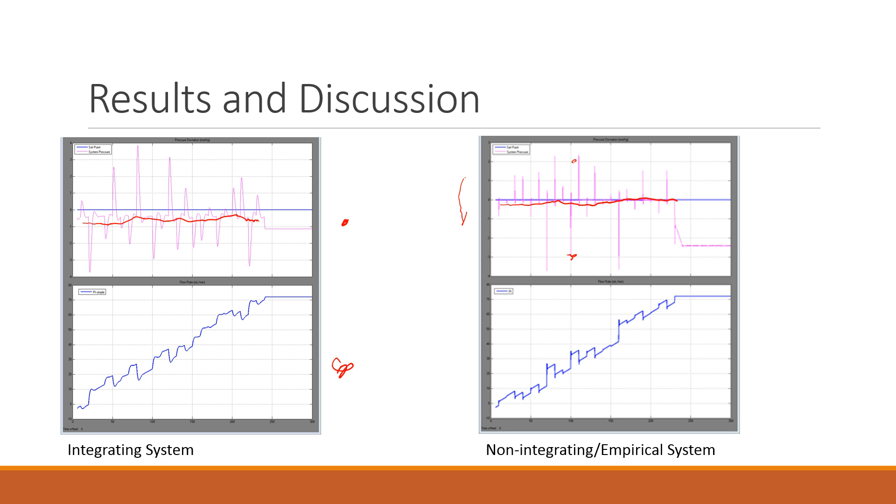The other thing we see is this upward trend in the flow on both. That physically represents the cells in the kidney being stripped away, and we're able to reach the maximum flow rate that the pump can put out. We also see that the more complex model is able to reach that maximum flow rate slightly faster than the simpler model. Here we've got about 3.8 hours, and we've got about 4 hours here. So we conclude that the non-integrating empirical system does a better job for our purposes.